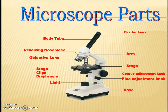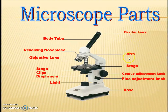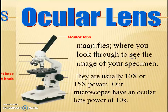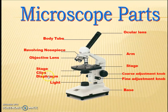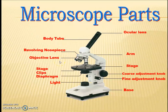Let's look at the different parts of the microscope. Starting with the ocular lens, arm, stage, coarse adjustment knob, fine adjustment knob, base, light, diaphragm, stage clip, objective lens, revolving nose piece, and the body tube. Let's look at these structures in detail and what they are for.